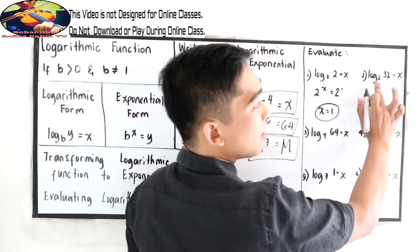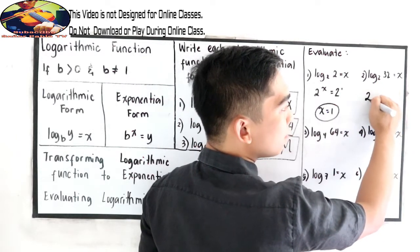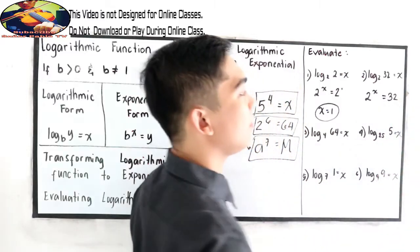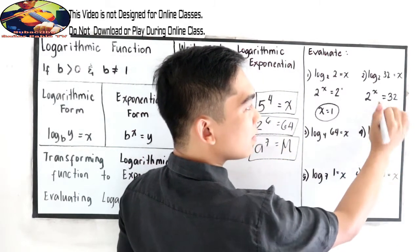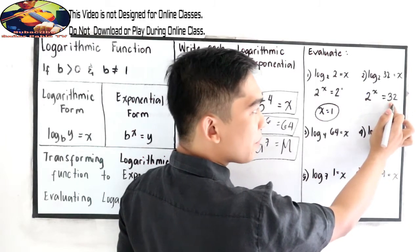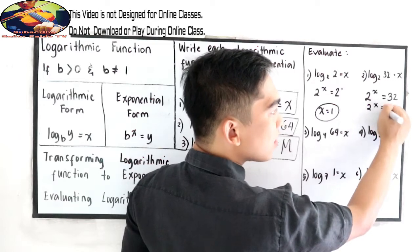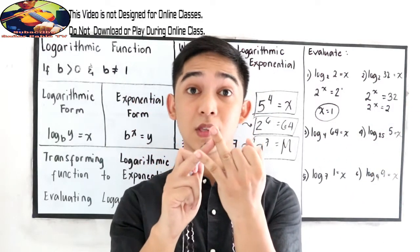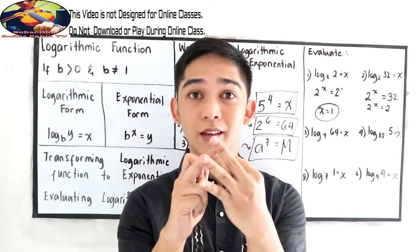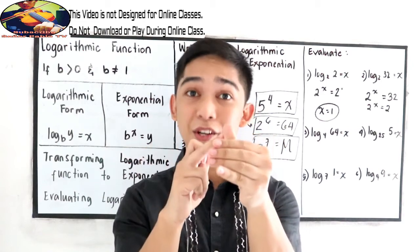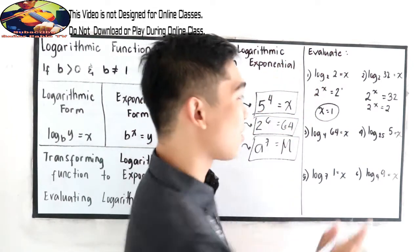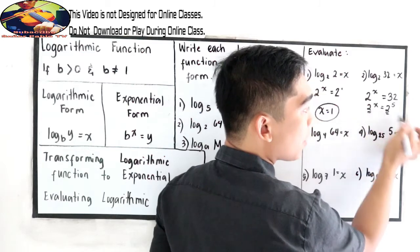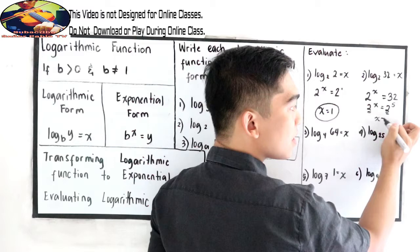Number 2: we have 2 raised to x is equal to 32. Let us write 32 in exponential form. We know that 32 equals 2 times 2 equals 4, times 2 equals 8, times 2 equals 16, times 2 equals 32. So 32 is 2 raised to 5. The base must be the same in order for us to equate the exponents. So in number 2, x is equal to 5.